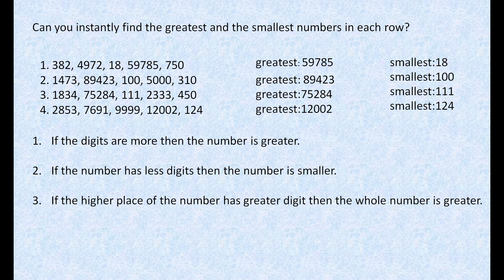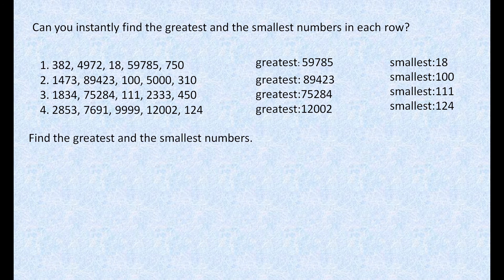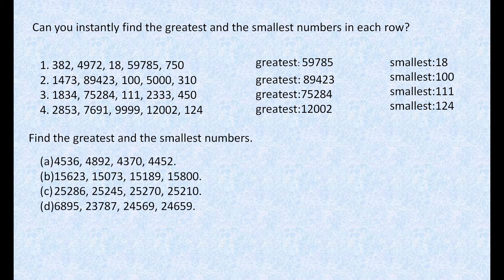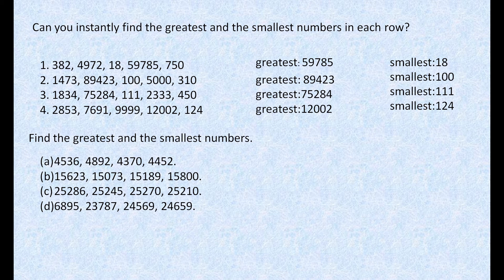I think you all have understood this. Let's go to the next question: 'Find the greatest and the smallest number.' I think you all have understood now, so we will solve this. Again, you have four questions. The first example has 4536, 4892, 4370, and 4452. We can't use the first and second rule here because all the numbers have the same number of digits. So we will use the third rule: if the highest place of the number has the greater digit, then the number is greater.